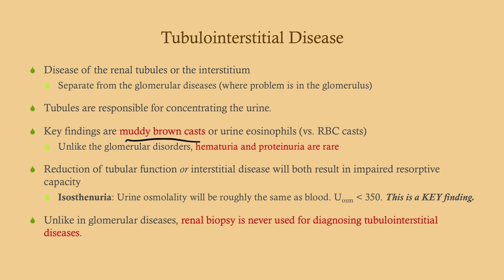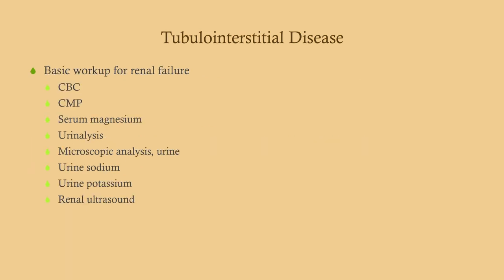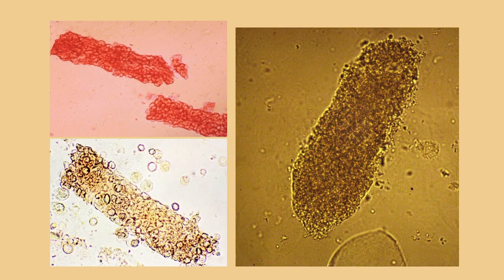The basic workup for renal failure includes a CMP — because that covers calcium and liver function tests important for these TI diseases — along with a CBC, BMP, magnesium, urinalysis, microscopic analysis looking for casts, urine sodium and potassium, and a renal ultrasound. We're looking for signs of inflammation, checking electrolytes, doing a thorough urine workup, and taking a look at the kidneys.